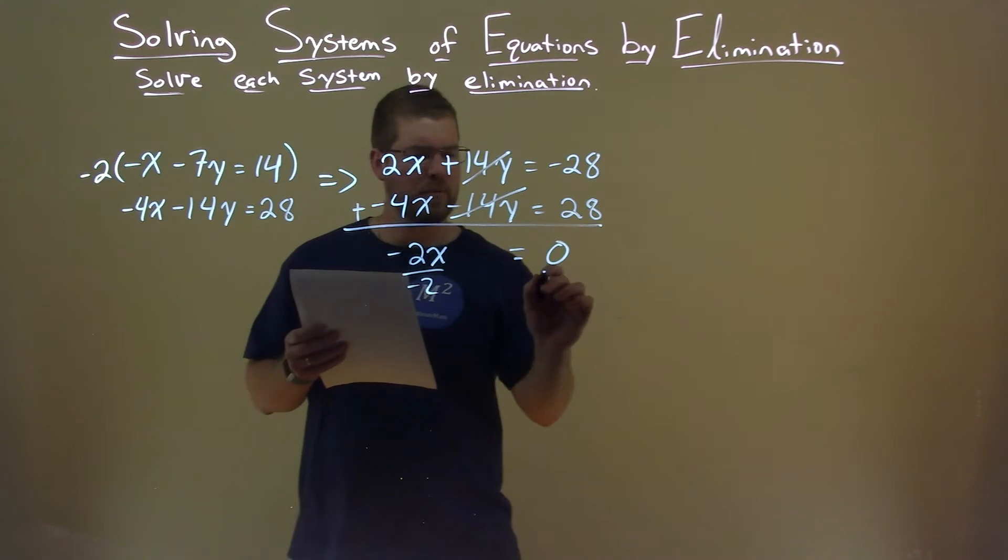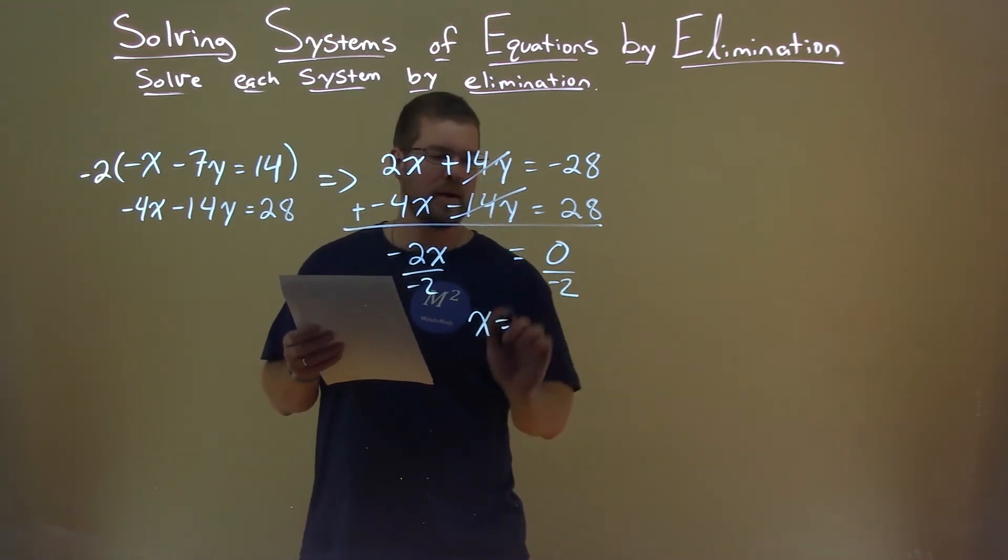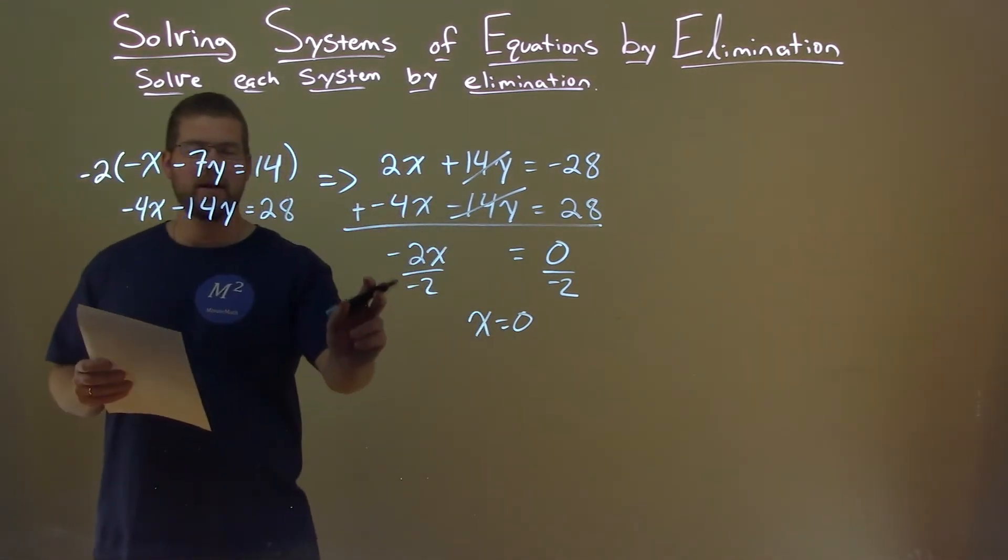Divide both sides by a negative 2 and don't get tricked here. x is equal to 0 divided by negative 2 which is 0. Make sure you're dividing by negative 2 there.